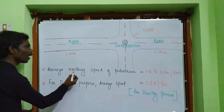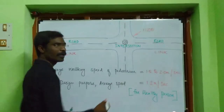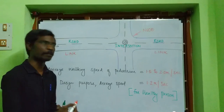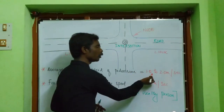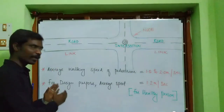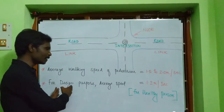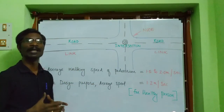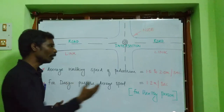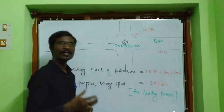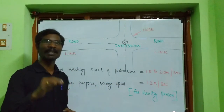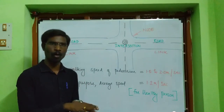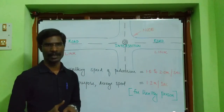The average walking speed of a pedestrian is 1.5 to 2 meters per second. For design purposes, the average speed of a person is considered 1.2 meters per second. This 1.2 meters per second accounts for all healthy persons walking on a road.